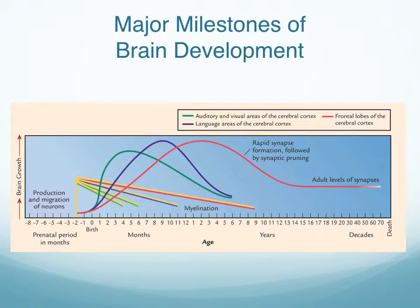What we see in terms of these processes of brain development is that they don't occur in a smooth, continuous manner. There are different periods of rapid development in different areas of the brain in terms of both synaptic formation and myelination. The curved lines display the formation of synaptic connections and synaptic pruning in the auditory and visual areas (green), the language areas (purple), and the frontal lobes (red) of the cerebral cortex.